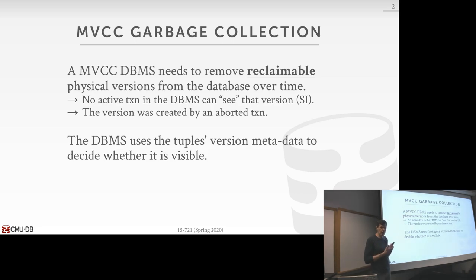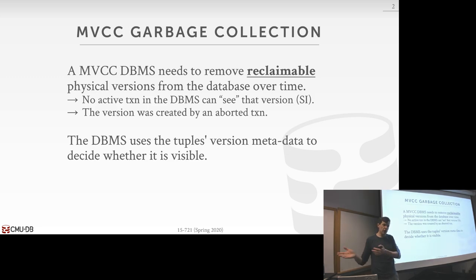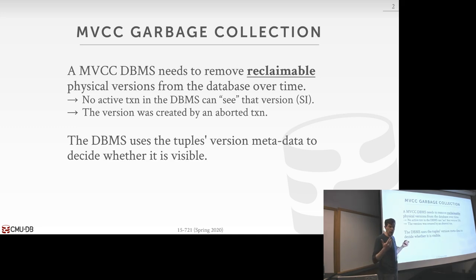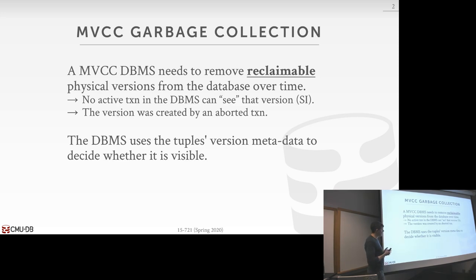When Postgres was first created in the 1980s, they didn't do any garbage collection at all because they wanted to support time travel queries — meaning you could query the database as it was at a point in the past. But in the 1990s, when people actually started using Postgres outside academia, the first thing they did was add garbage collection back, because you run out of space pretty quickly if you have a lot of churn in your database.